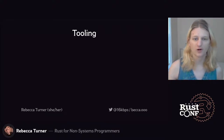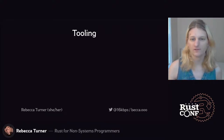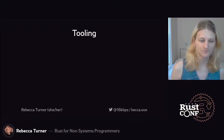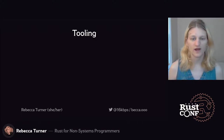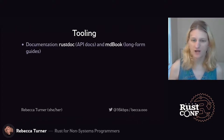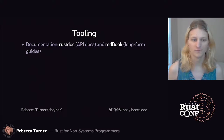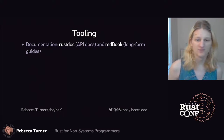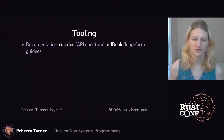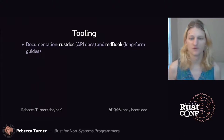Before we start looking at code, I want to point out a few of the tools that make writing Rust easy and fun. We have RustDoc, which compiles doc-comments written in Markdown to web pages, complete with search, links, and more. We also have MDBook for writing longer-form narrative-style documentation — it was created to write the Rust Book, the main source of Rust documentation.